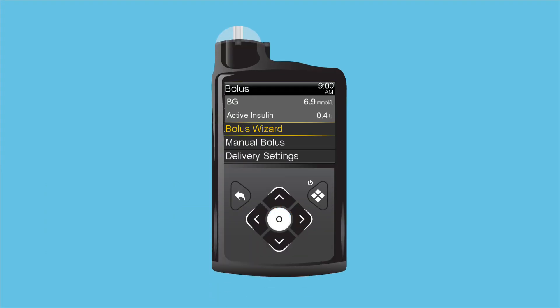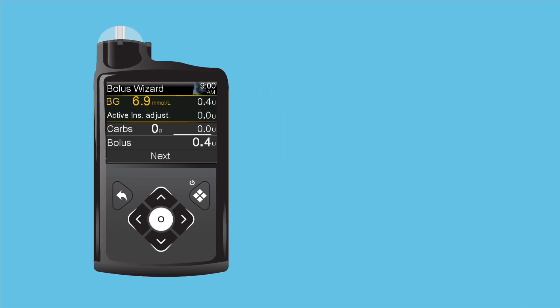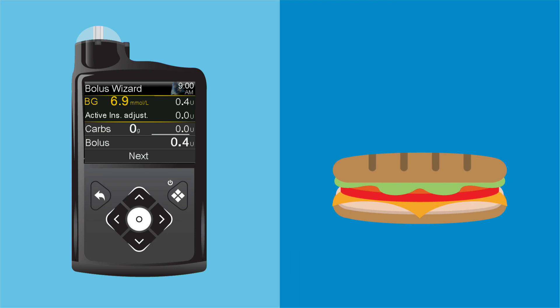He selects Bolus Wizard. On the next screen, he sees BG at the top. Since Andy is using a linked meter, his BG is already entered on the screen. Now Andy needs to enter his carbs, and he knows his sandwich is about 30 grams. He puts in 30 and presses Select, and selects Next.